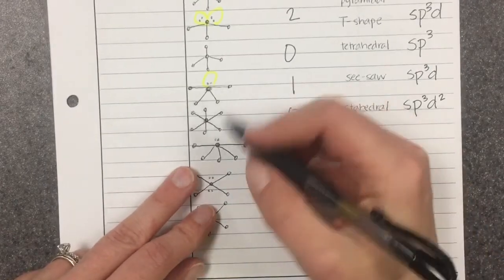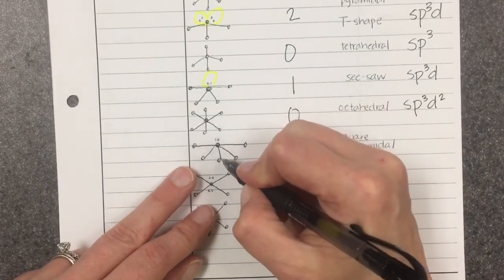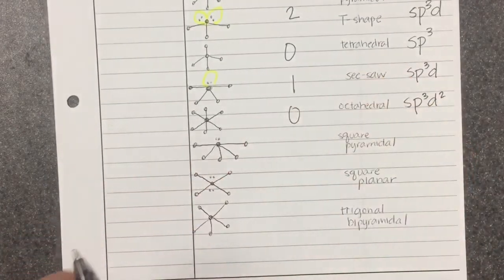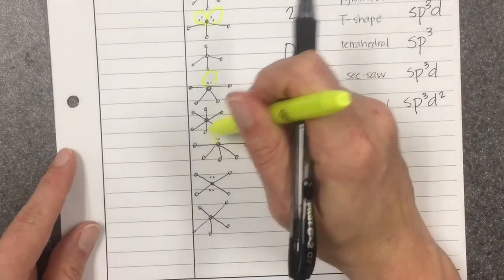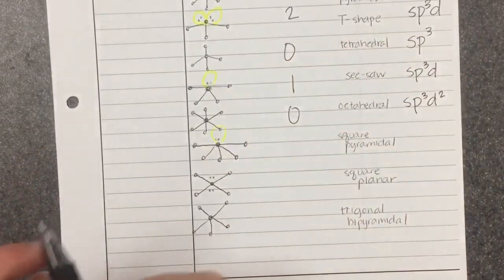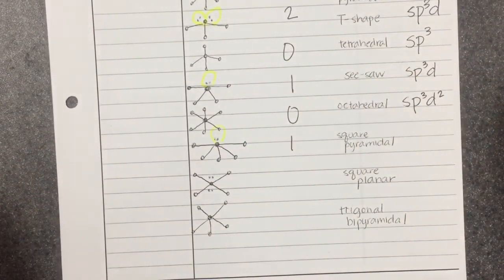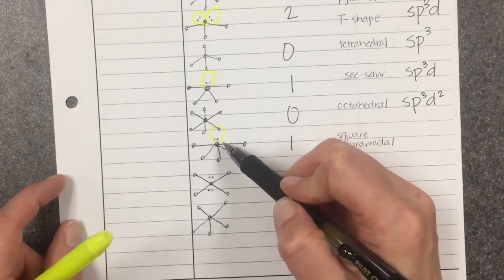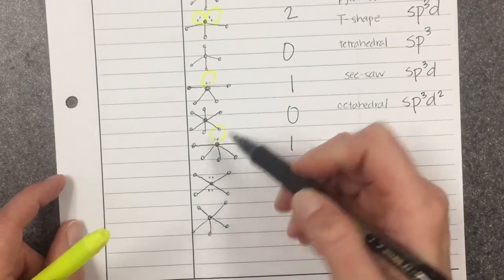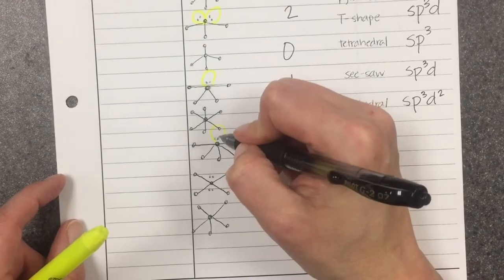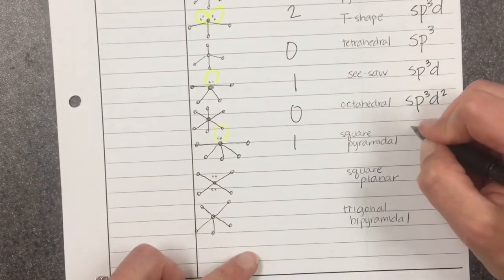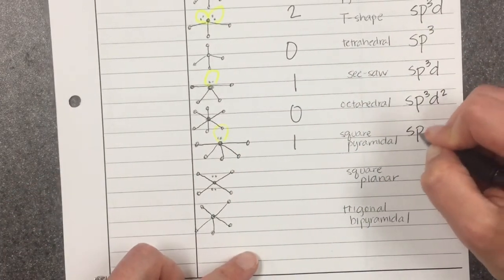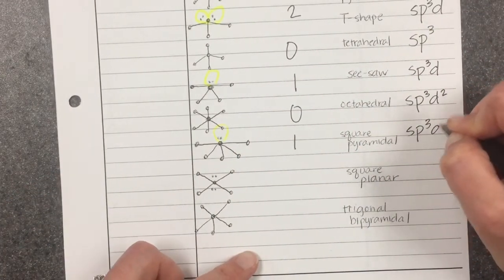Next one: five terminal atoms and one lone pair of electrons — that's going to be six areas in which electrons need to bond, so six orbitals. Again, SP3D2.